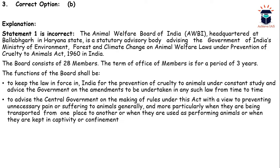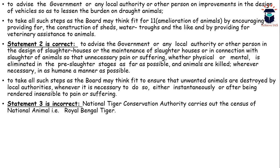The Prevention of Cruelty to Animals Act 1960 established the Animal Welfare Board of India. It has 28 members and a member serves for 3 years. Its functions include advising the central government on ways to minimize the suffering of animals, including design and processes by which animals are to be killed so that minimum pain and suffering — both physical and mental — is caused. The Tiger Census is done by the National Tiger Conservation Authority.